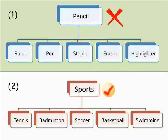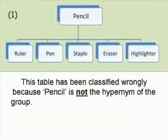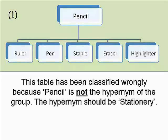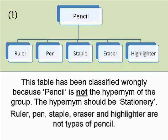Here's the answer. Did you get it right? This table has been classified wrongly because 'pencil' is not the hypernym of the group. The hypernym should be 'stationery.' Ruler, pen, staple, eraser, and highlighter are not types of pencil.